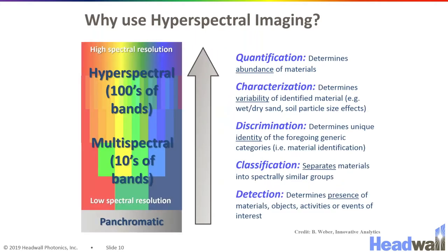This illustration briefly talks about the extra information you get as you go from a simple monochromatic camera to an RGB camera to a multi-spectral camera with tens of bands, and finally to a hyperspectral imager where you can get a complete and continuous spectrum.